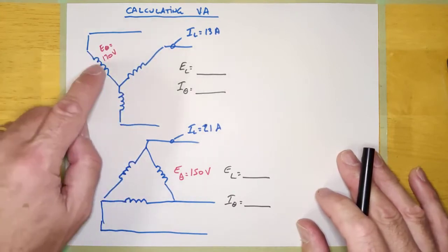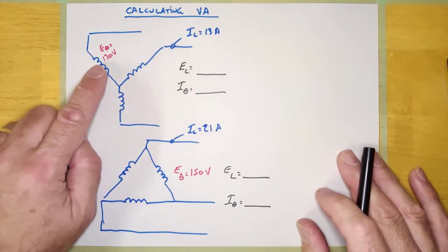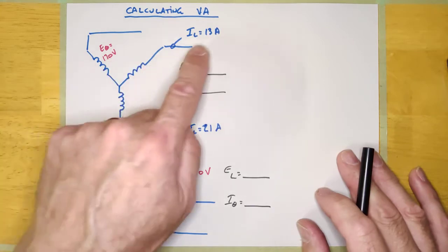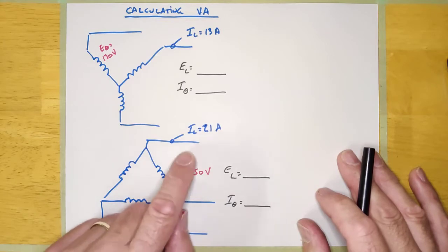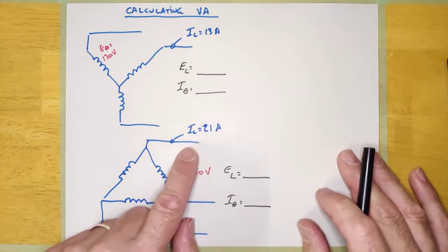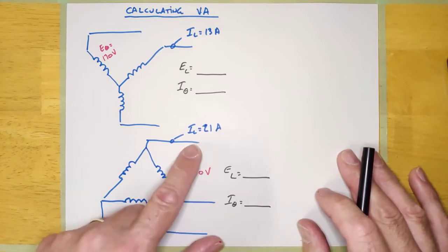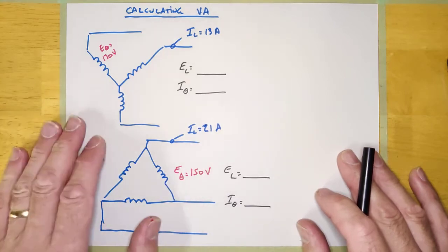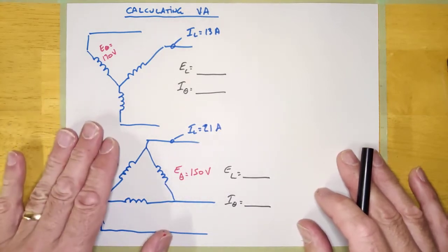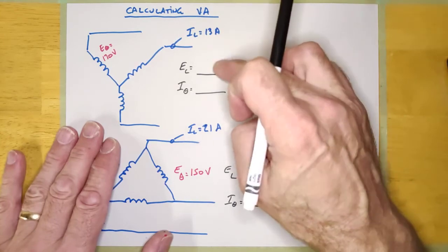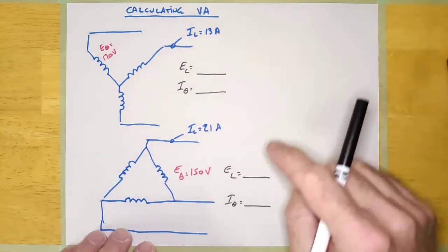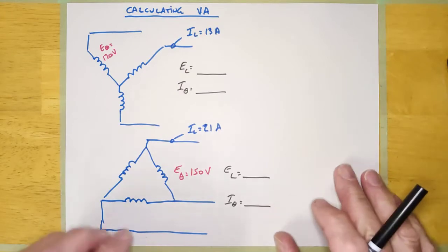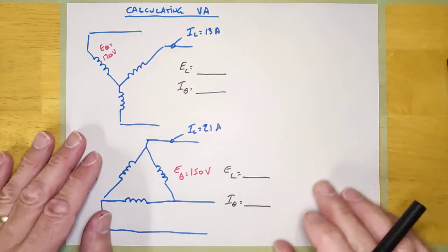Here's a Y-connected system. The phase voltage is 170 volts and the line current is 13 amps. And then I have another system here — it's Delta-connected. The phase voltage is 150 and the line current is 21 amps. I want you guys to pause the video and calculate the line voltage and the phase current for the Y system, and the line voltage and phase current for the Delta system.